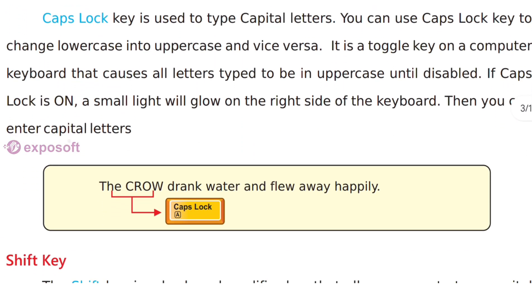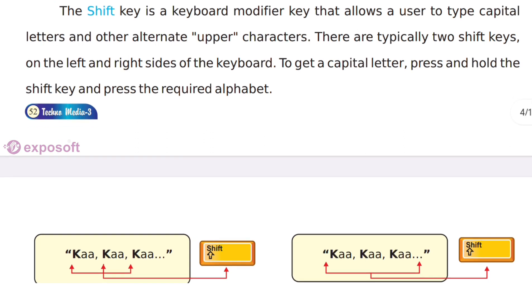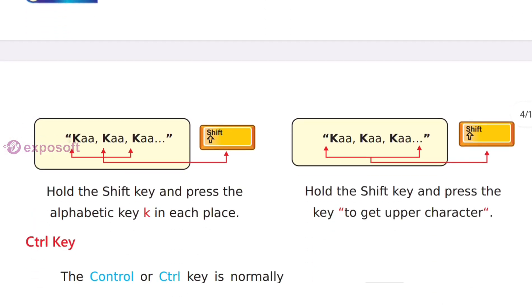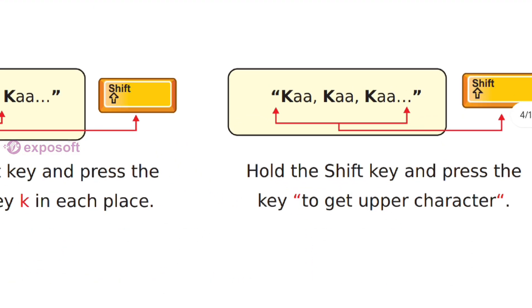Next is Caps Lock key. Caps Lock key is used to type capital letters. Next is Shift key. Shift key is a modifier key and it allows a user to type capital letters and other alternate upper characters.